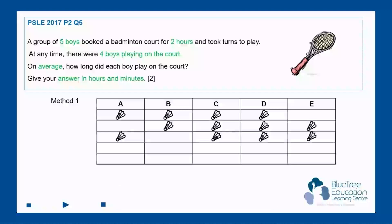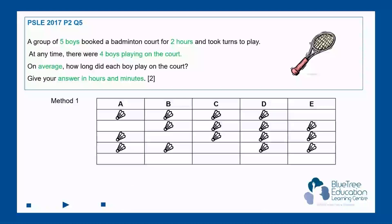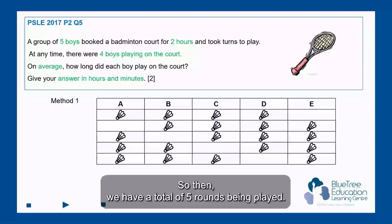The third round we have A, C, D, E. After that we have A, B, D, E. And lastly we have A, B, C, and E. So that is a total of five rounds being played.